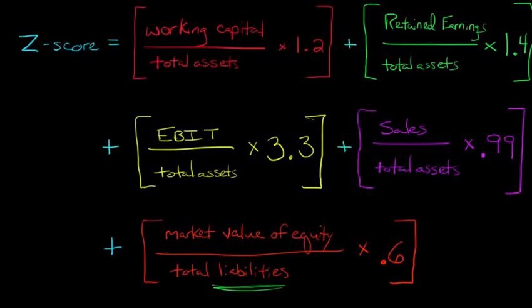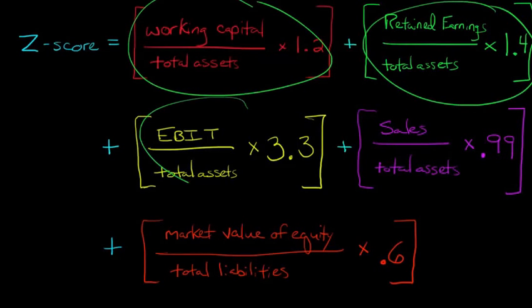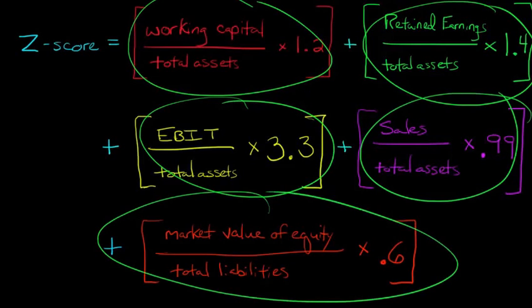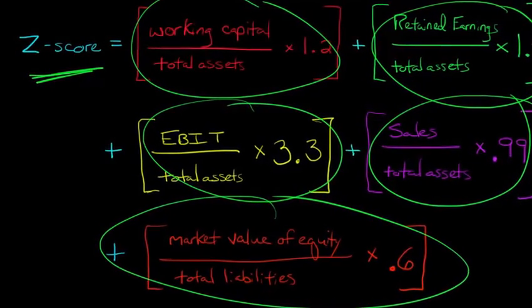So when you've got each one of these little components here, when you come up with a number, you just add all five of these together, and that's your Z-score. Now, let's say you've got your Z-score, you say, okay, now I've got some number, 5.87 or something. What do I do with that?